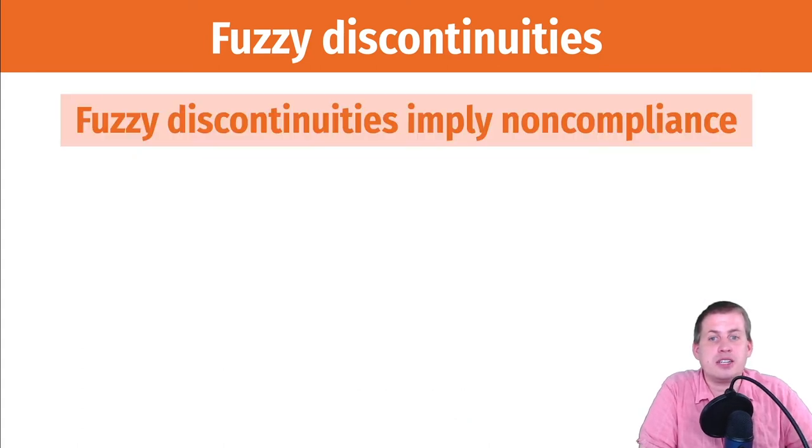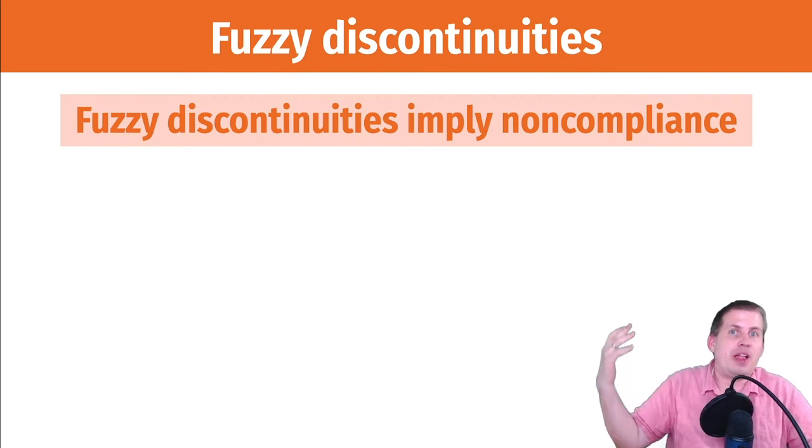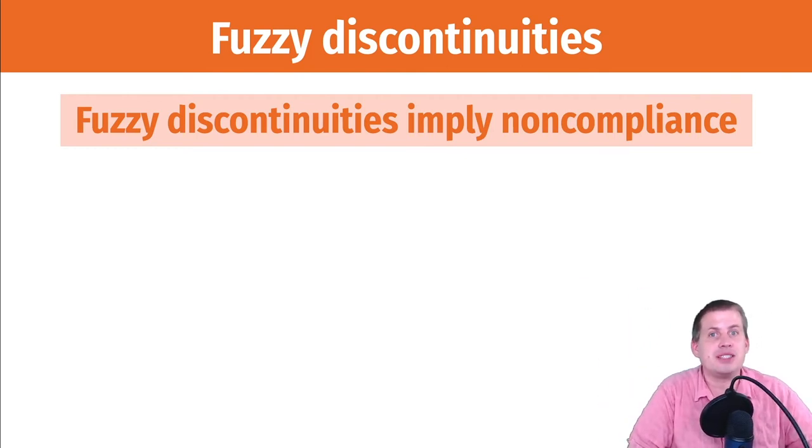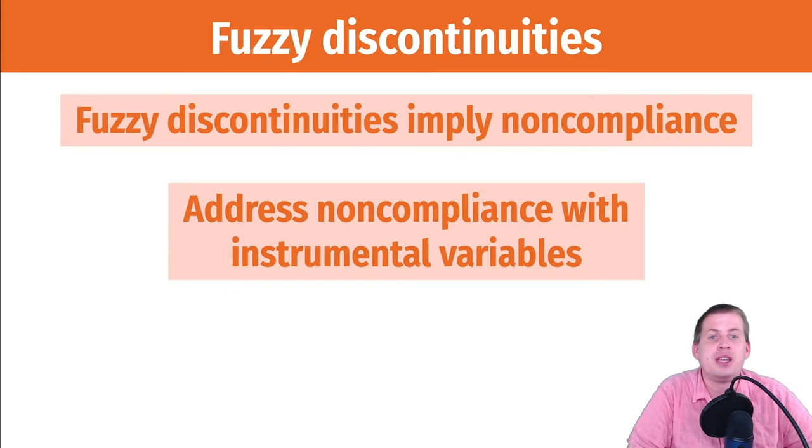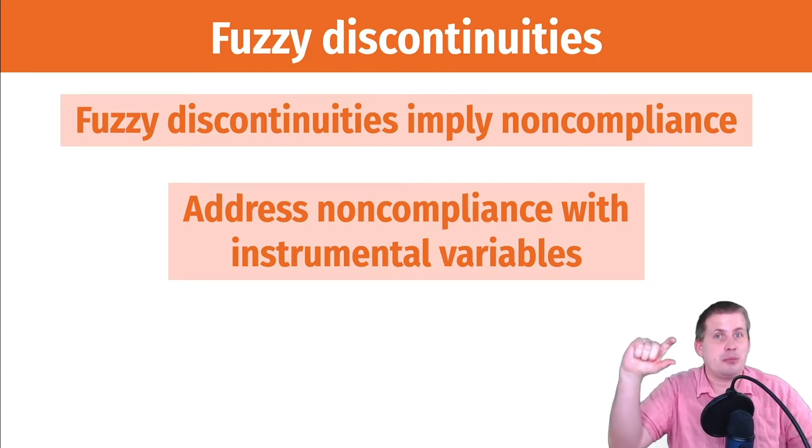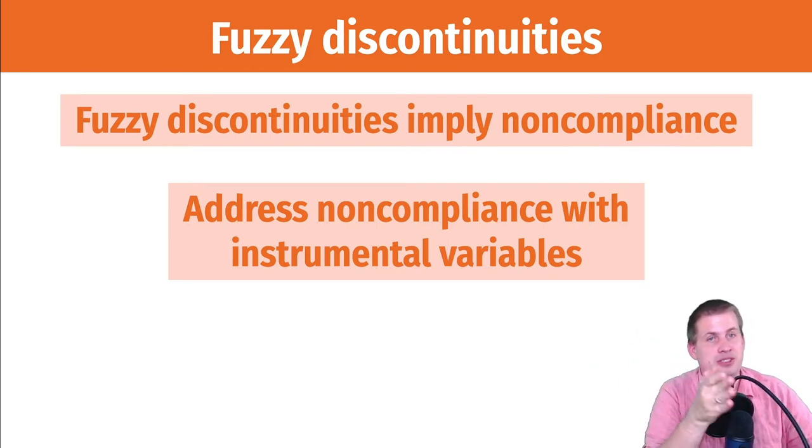So fuzzy discontinuities imply non-compliance. So how do we deal with compliance issues? As we talked about in the last two sections, you deal with compliance using instrumental variables because instrumental variables give you the complier average causal effect. So what we can do is use an instrument with our regression discontinuity to limit the causal effect at that jump at the cutoff to just compliers.